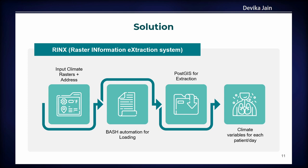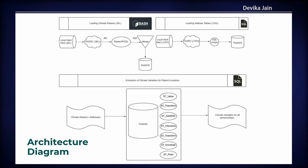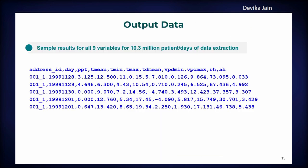My colleague Devika Jain is the programmer who wrote the code. This is the basic overview of what it does: it inputs the climate rasters and the addresses, uses shell scripts to load those into the database. Once they're in PostgreSQL, all the extraction happens, and then it exports the climate variables for each address location for each day for use in statistical research by health professionals. In the more detailed architectural diagram, the PostGIS part uses these ST commands: ST_Value, ST_Transform, ST_SetSRID, ST_Intersects, ST_Transform, ST_Envelope, and ST_Point. It's a very elegant solution — just one bash script and one SQL script within PostGIS to do this automation.